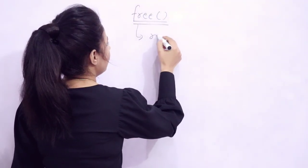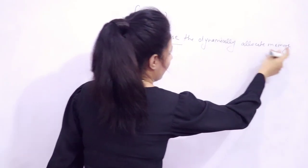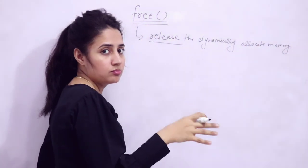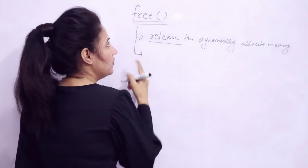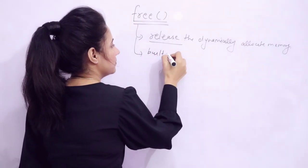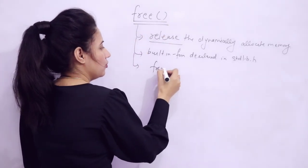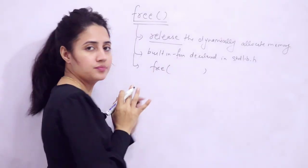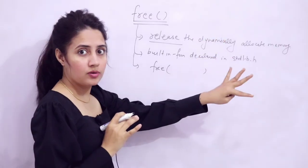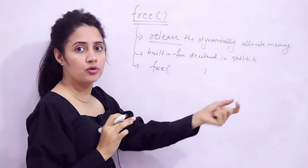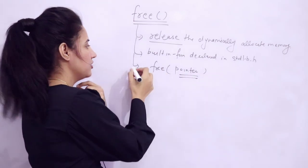So what does the free function do? It releases the dynamically allocated memory — memory that you allocated using malloc, calloc, or realloc. It is a built-in function defined in stdlib.h. The syntax is simple: you write free and pass the pointer. Whatever address malloc or calloc returned, you stored that in a pointer, and you just pass that pointer to free.